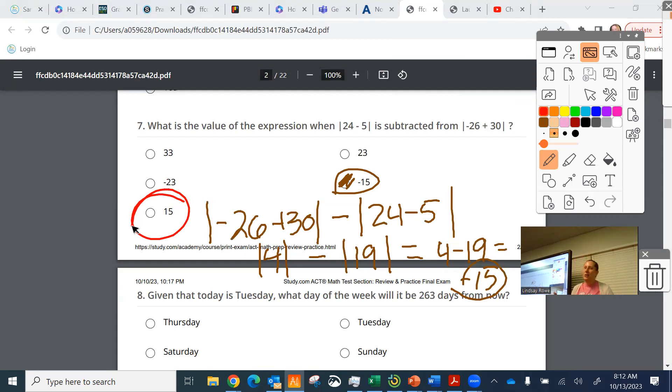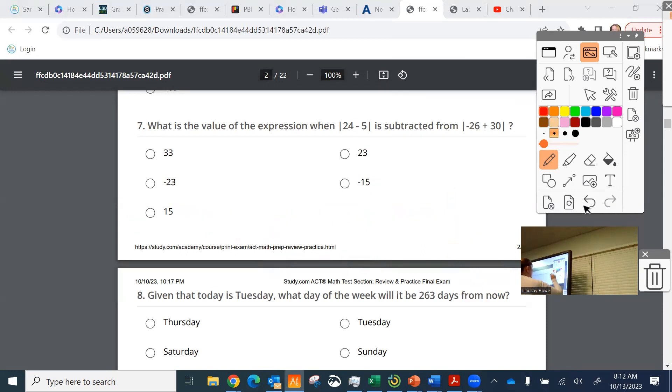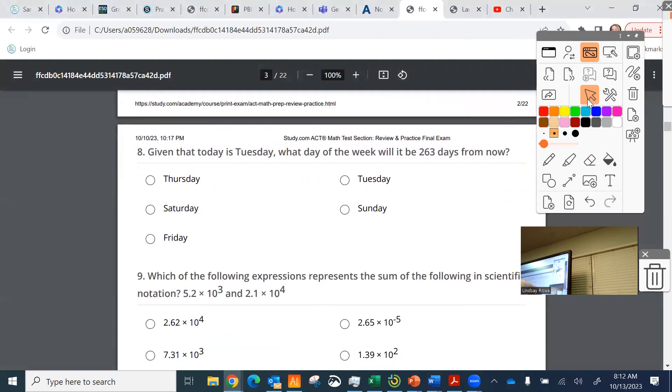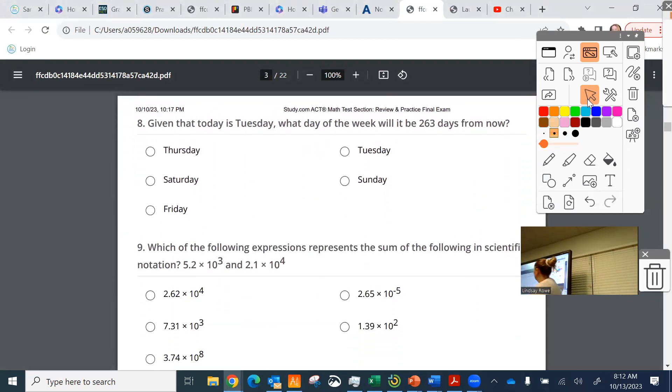So, it's tough only because it's intentionally tricky, they do that. Okay. Here, this is a great problem, and I love it. Given that today is Tuesday, what day of the week will it be 263 days from now? Here's how I approach the problem. I said that if we take 263 and divide it by seven, okay, because every seven days, it's going to be Tuesday, no matter what year it is.